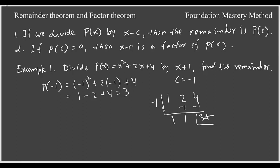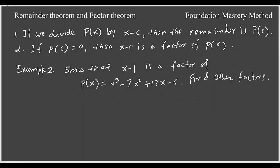Here we take Example 2. It says show that x - 1 is a factor of P(x) = x³ - 7x² + 12x - 6 and find other factors. This is a cubic polynomial, so it has three zeros. How do we show that this is a factor? Since